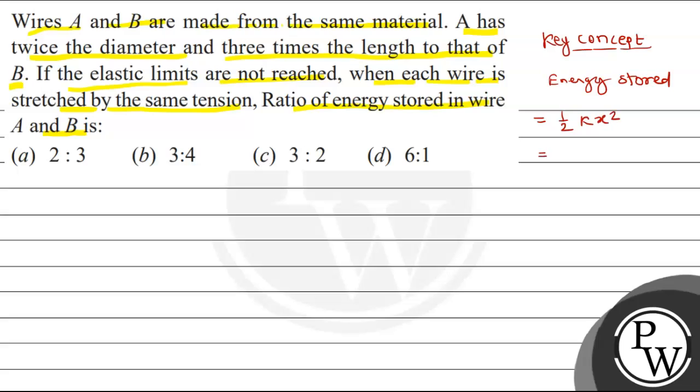k is spring constant. This can be written as 1 upon 2 kx into x. kx is treated as force. So we can write 1 upon 2 f into x.